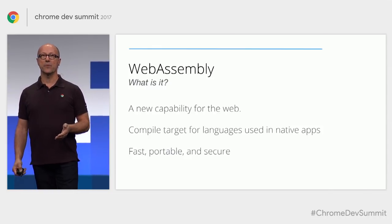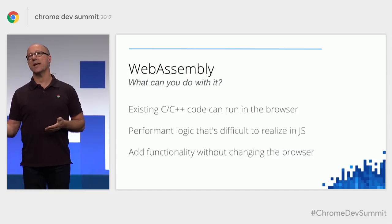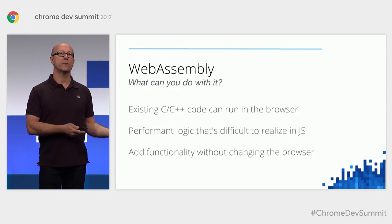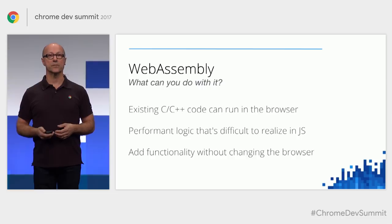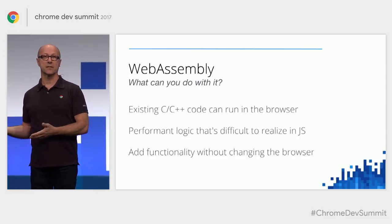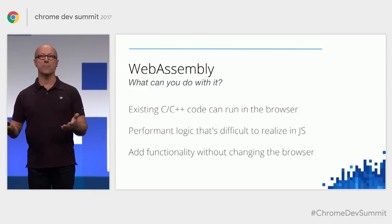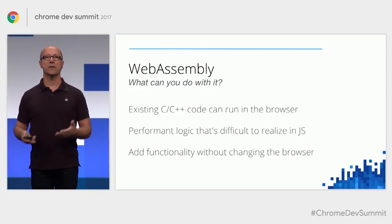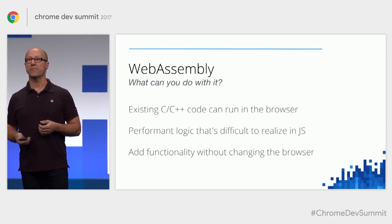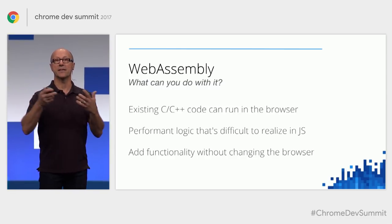So you might be wondering, what can you actually do with it? Say you already have a whole lot of native code — a native app that runs on desktop or even in an app store. It could be written in C++, contain business logic, or you could have a game engine that represents many man-years of invested time — a multi-million line code base sitting in your native application. You might think about bringing that over into the web.